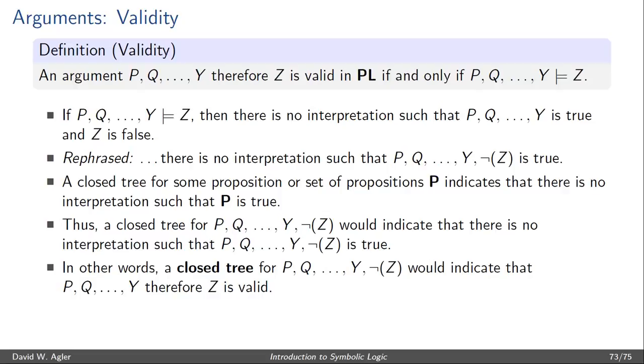If it doesn't yield a closed tree, then the argument is invalid. That is, a completed open tree for P, Q, Y, not Z would indicate that the argument P, Q, Y, therefore Z is invalid.